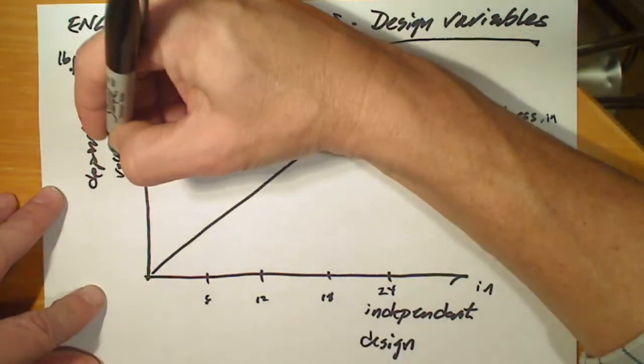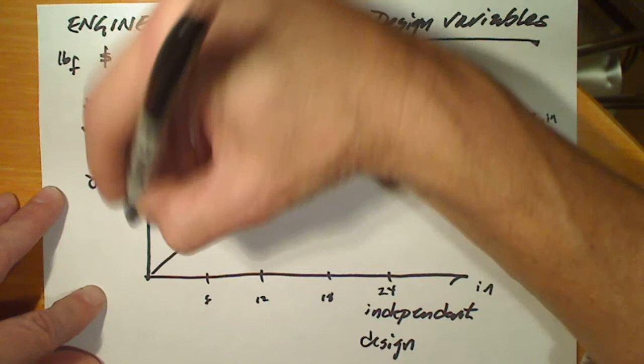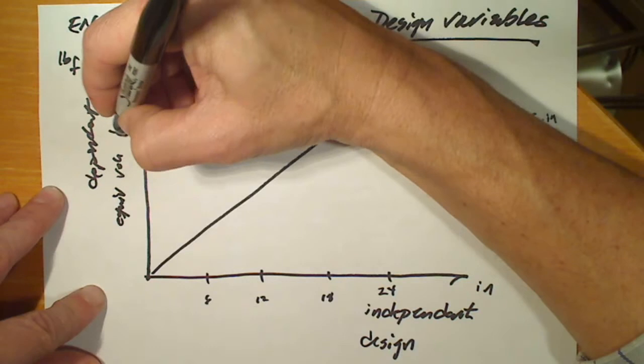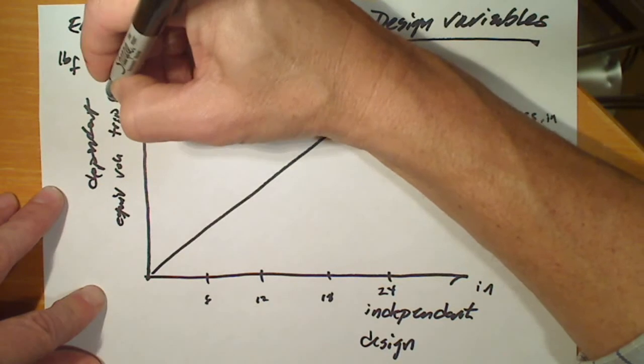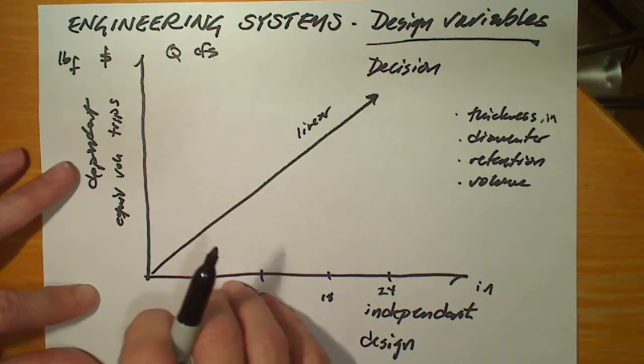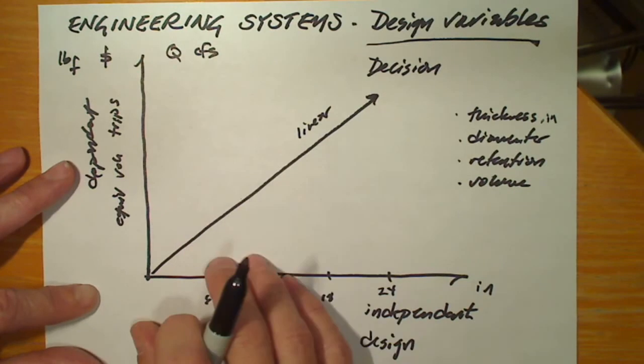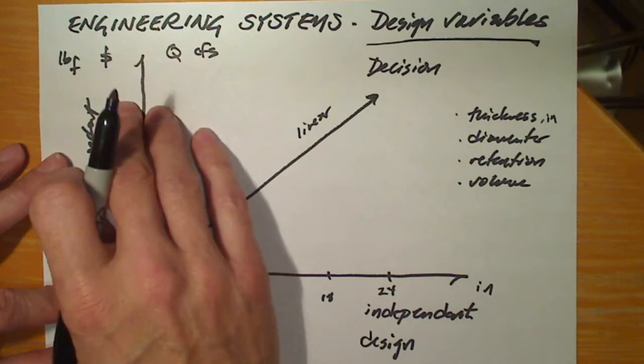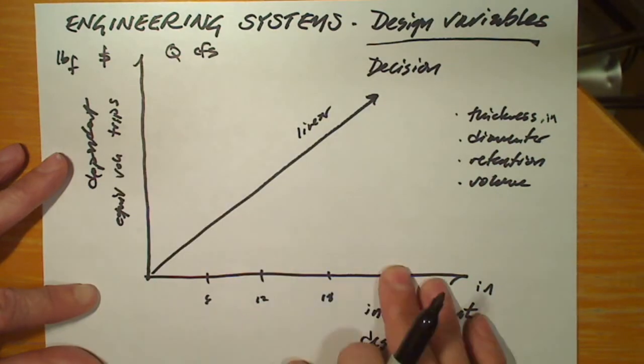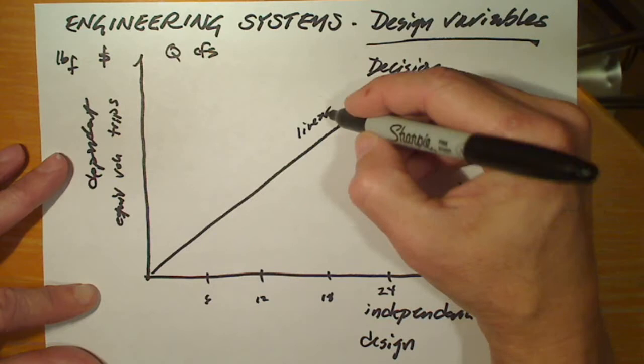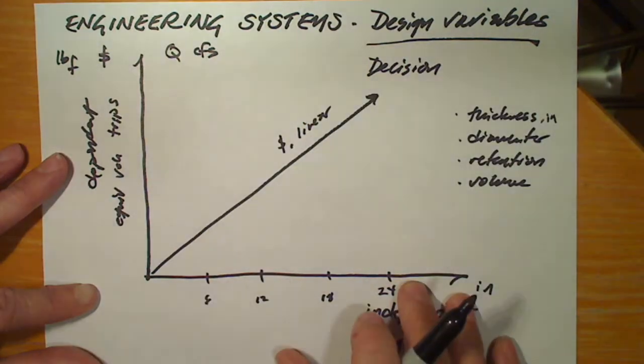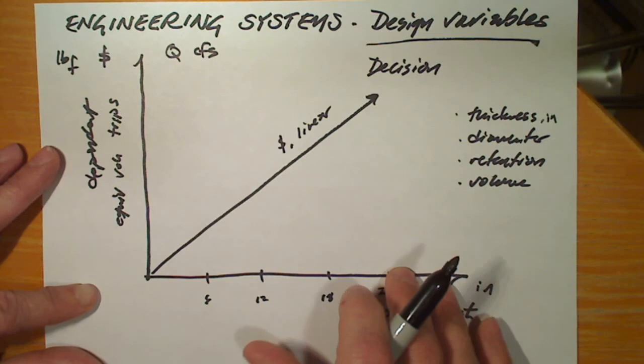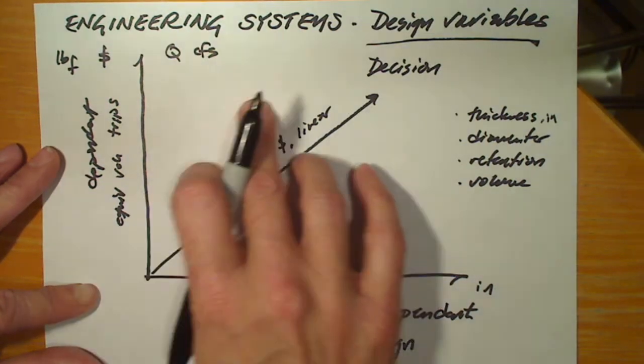Whereas another dependent variable might be the equivalent vehicle trips. We'll call this the lifetime of the pavement. Trucks, cars go over the pavement and each one wears the pavement out a little bit. The equivalent vehicle trips might also increase in terms of the pavement thickness. And here, we don't know what that relationship looks like.